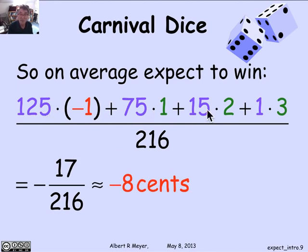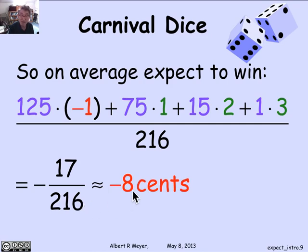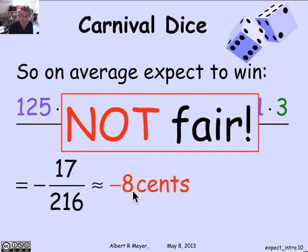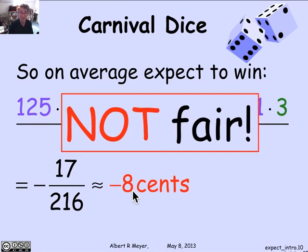Those numbers on top were how the 216 rolls split among losing $1, winning $1, winning $2, and winning $3. And it comes out to be slightly negative — it's actually minus 17/216 of a dollar, which is about minus 8 cents. So I'm losing, on the average, 8 cents per roll. This is not a fair game. It's really biased against me. If I keep playing long enough, I'm going to find that I average out a steady loss of about 8 cents a play.